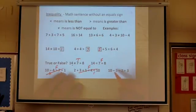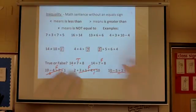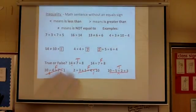And last one here. 10 minus 5 is equal to 2 plus 3. This side is 5, that side is 5. It's like a teeter-totter. They're balanced. So that is true.